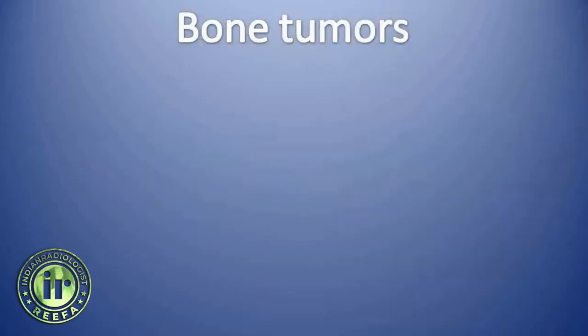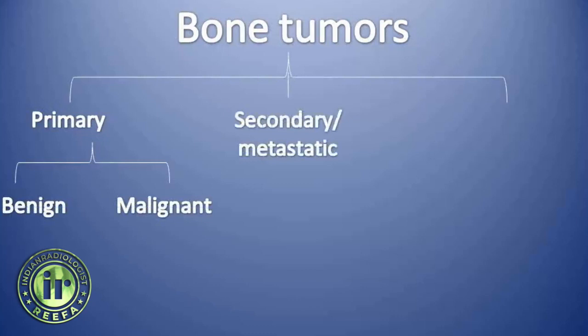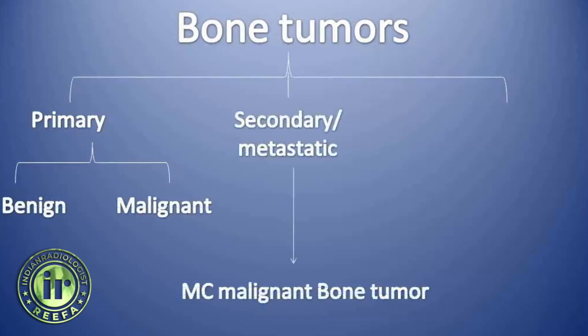Bone tumors can be classified into three types. First is the primary, which can again be divided into benign or malignant. Second is the secondary or metastatic, which is actually the most common malignant bone tumor. Third is the tumor-like process, which includes multiple lesions that are not true tumors but mimic or behave like a tumor.